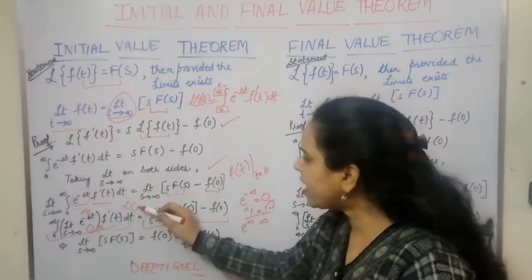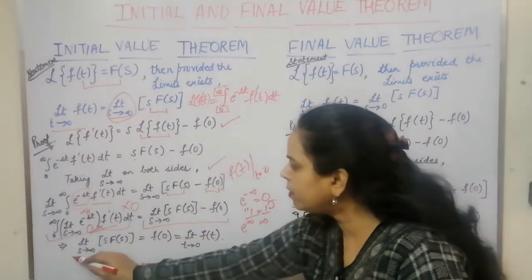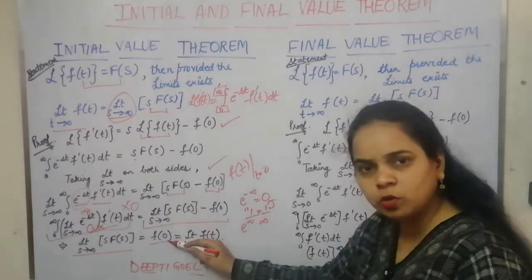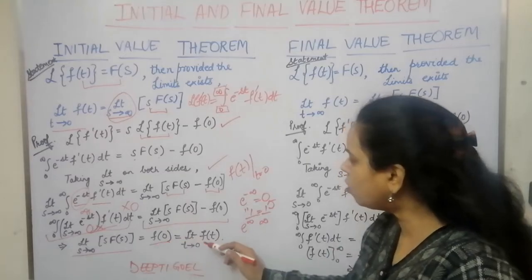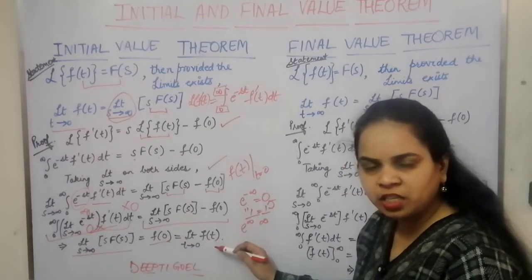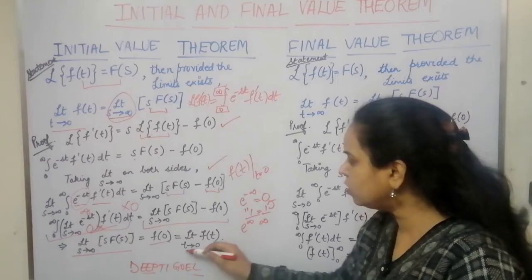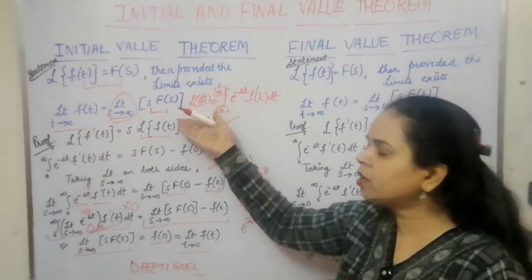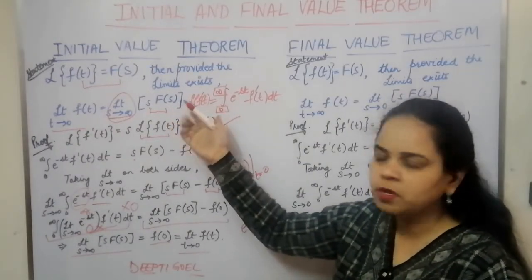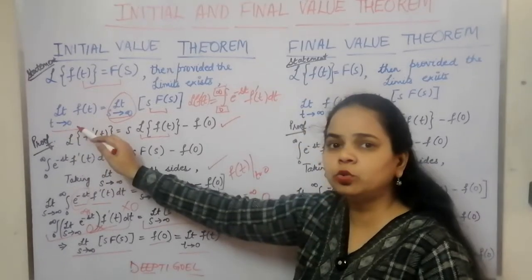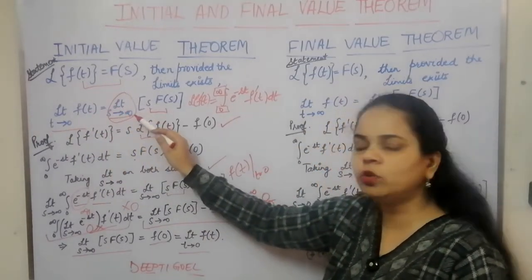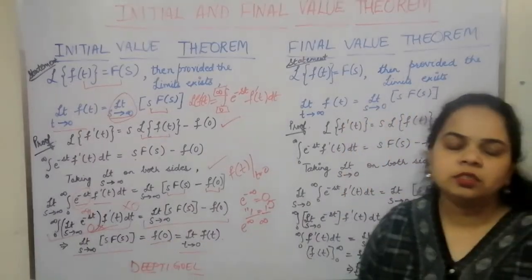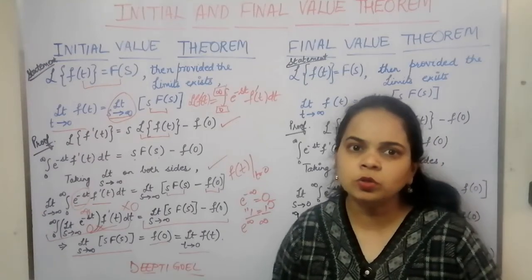We are left with only the two terms on the right-hand side. Since the left-hand side is 0 and there is a negative sign, we can say that limit s→∞ of s·F(s) = f(0). And f(0) is the value of the function f(t) when t is tending to 0. In this way we have proved the result — this is exactly what the theorem stated: limit t→0 of f(t) = limit s→∞ of s·F(s). This is the initial value theorem.